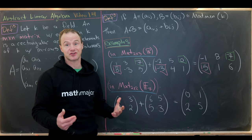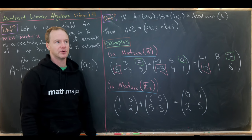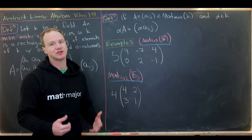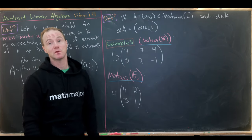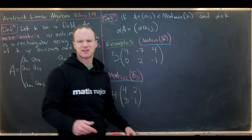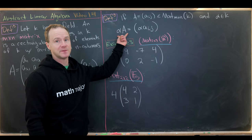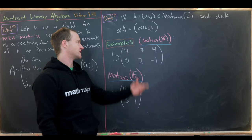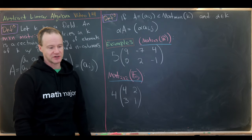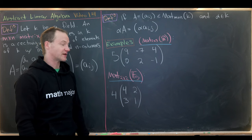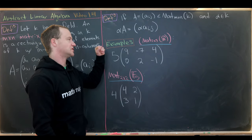Now we'll define scalar multiplication with matrices. We'll need a matrix A — an M by N matrix with entries in K — and a scalar alpha in K. Then the scalar multiple of A by alpha, written as alpha·A, is the matrix with entries alpha·AIJ. In other words, the IJth entry of the scalar multiple is the product of alpha with the IJth entry of the original matrix. You just distribute the scalar onto each entry.